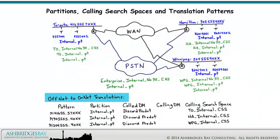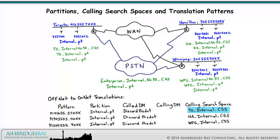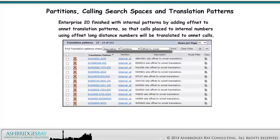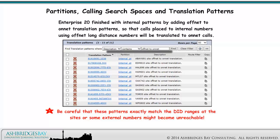We'll add off-net to on-net translation patterns so that calls placed to internal numbers using off-net long distance numbers will be translated to on-net calls. We have a pattern 9-1-416-55-57XX for translating long distance off-net calls to Toronto on-net calls. The pattern is in the internal partition, discards pre-dot, and looks for the translated number in the Toronto internal calling search space. We have similar translation patterns for the Hamilton and Winnipeg sites. Enterprise 20 finished with internal patterns by adding these off-net to on-net translation patterns. Be careful that these patterns exactly match the DID ranges at the sites or some external numbers might become unreachable.